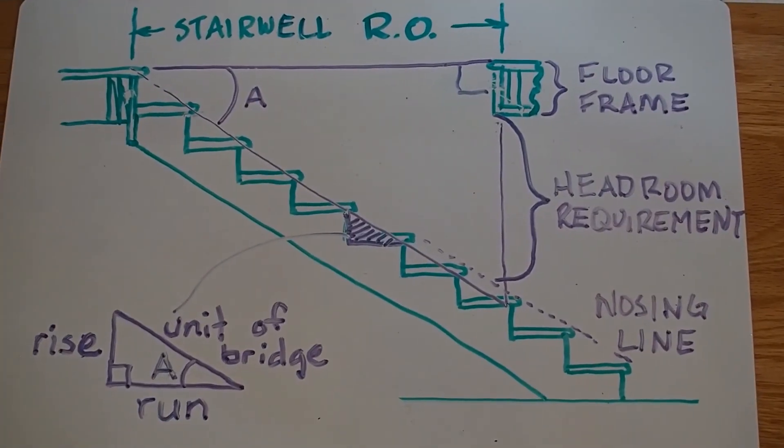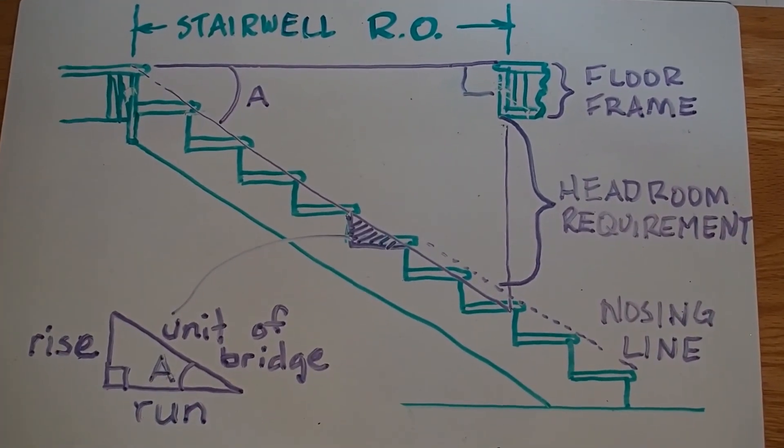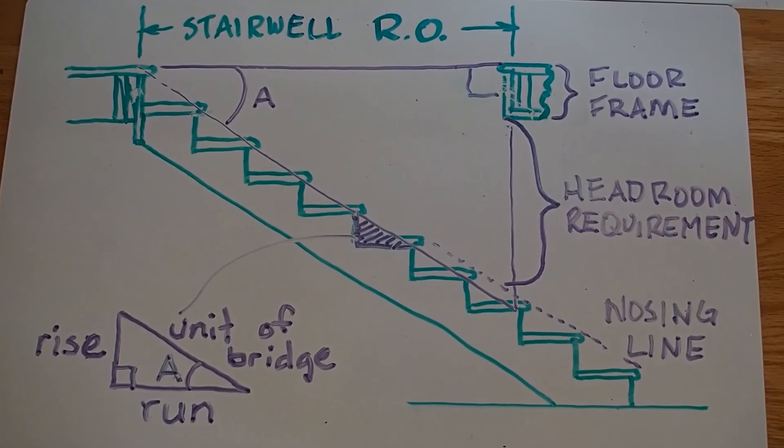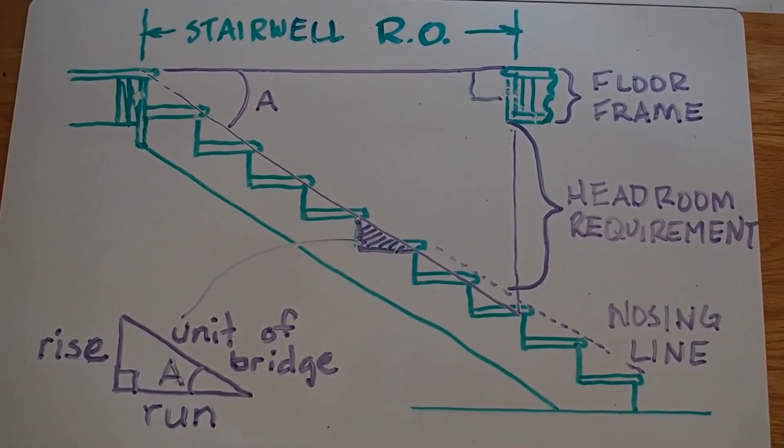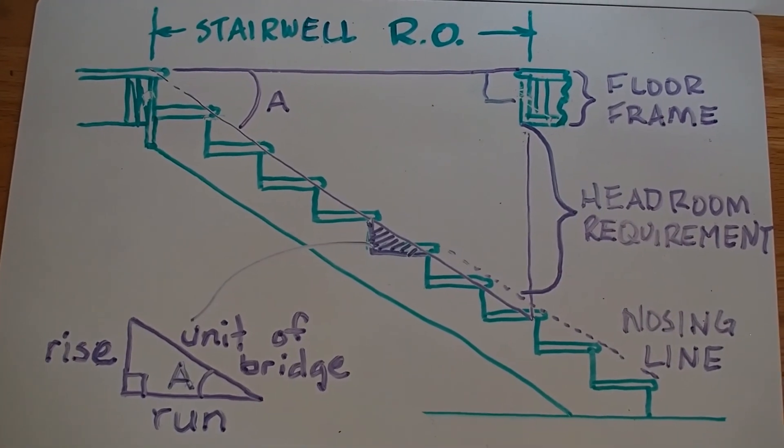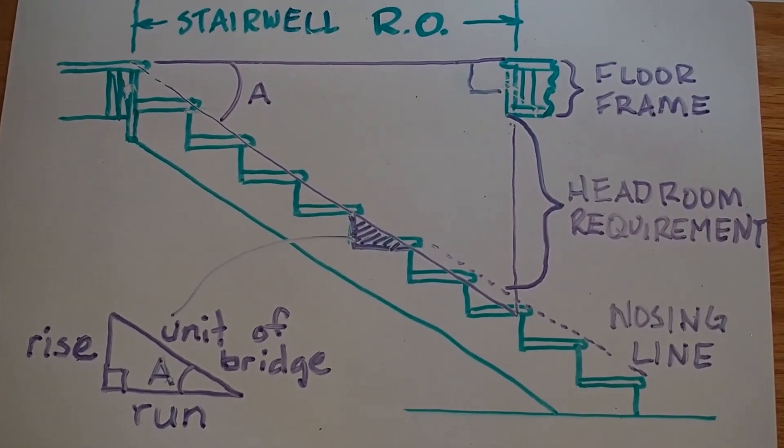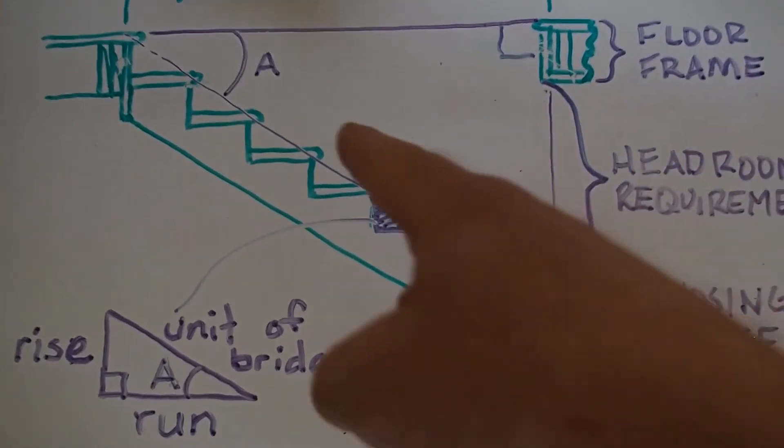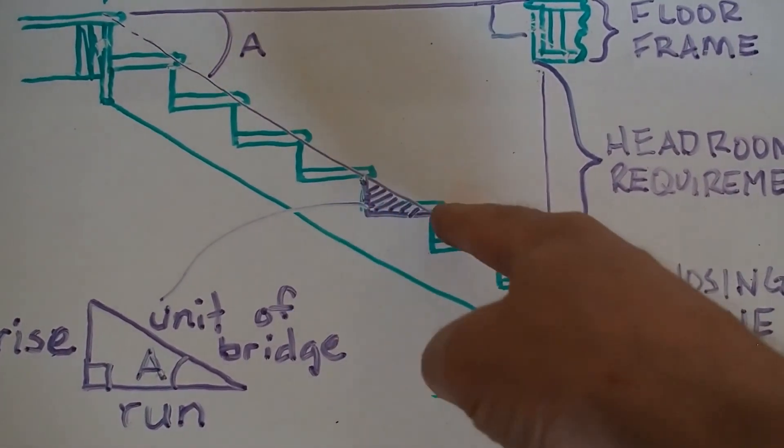Okay, this is what the stairwell opening looks like as a picture. So you'll note that I've got the stairs, and I've drawn a big triangle that represents the stairwell rough opening. And it starts from framing and goes to framing. That's why the hypotenuse line right here is going through the nosing.